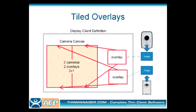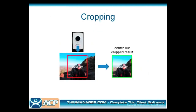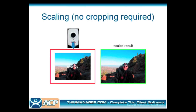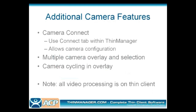You can also drop the overlay into an existing application like an HMI, so that within your HMI you're able to see the camera output. You can do cropping within ThinManager — in the overlay configuration you can crop so you're only getting part of the picture. You can scale it to expand and fill the whole screen, or crop without scaling and get black bars like a letterbox effect. You can also cycle different cameras in the overlay and have multiple cameras — click in there and select them.